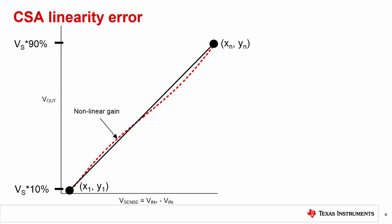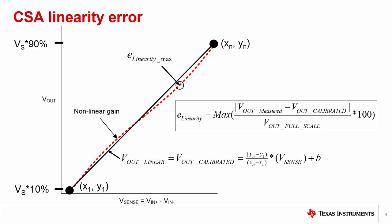For example, if the supply is 5 volts, the two points considered are 0.5 volts and 4.5 volts. Determining the calibrated gain requires calculating linear slope and offset. Linearity error specified in the datasheet is set by the data point that is the furthest from the calibrated gain curve. The percentage linearity error is calculated as Vout measured minus Vout calibrated divided by the full-scale Vout range.